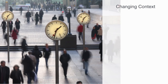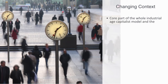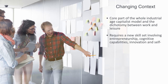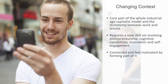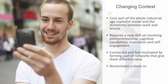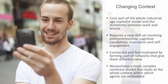This theory of management has been the default since the industrial age and has been the motivational structure throughout the 19th and 20th century. It is a core part of the industrial-age capitalist model and the dichotomy between work and leisure. But the post-industrial economic environment we are moving into requires a new skill set involving entrepreneurship, cognitive capabilities, innovation, and self-engagement. In this economy, people's needs and motive structures are more complex — it is an economy where people feel motivated by forming part of networks through social media, collaborative consumption, peer production, creative commons, and open source. All of these go beyond our traditional understanding of why people render professional services, necessitating a more complex, non-linear model that looks at the whole context within which agents make their decisions.